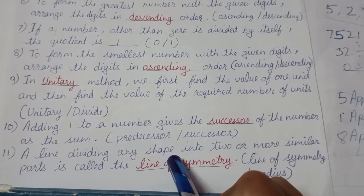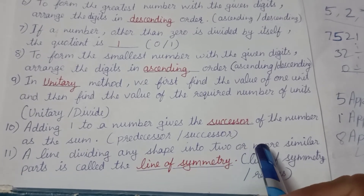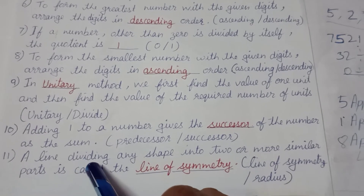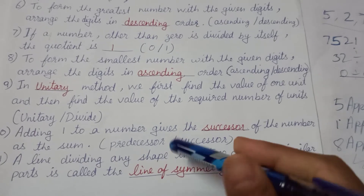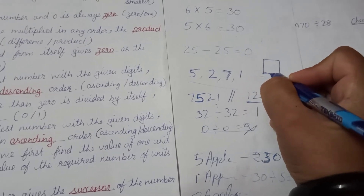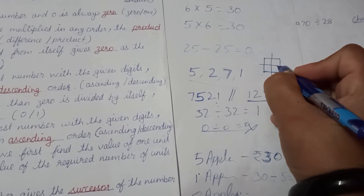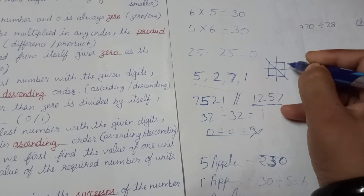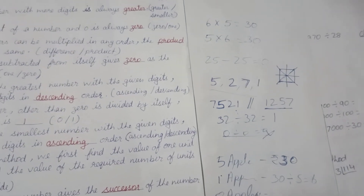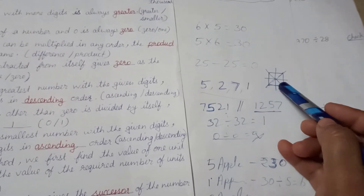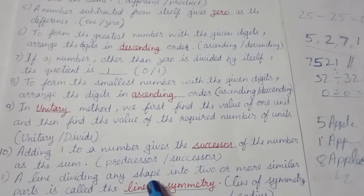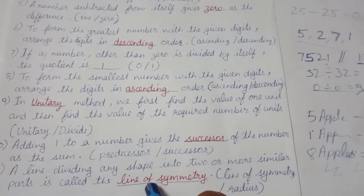A line dividing any shape into two or more similar parts is called a line of symmetry. For example, a square has four lines of symmetry — each line divides the square into similar parts. So a line of symmetry divides a shape into two or more similar parts.